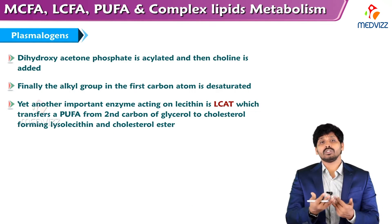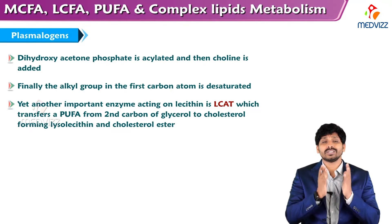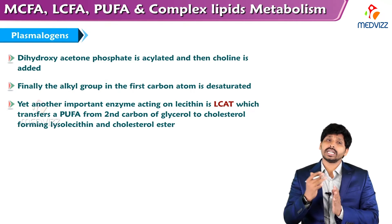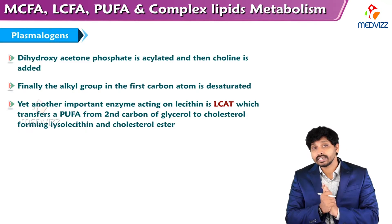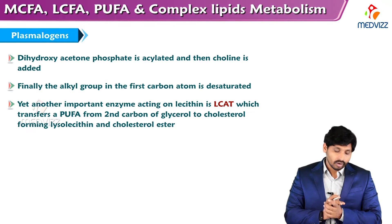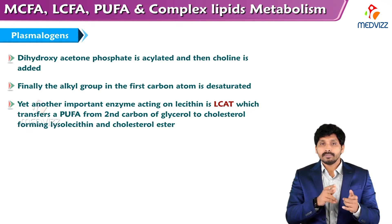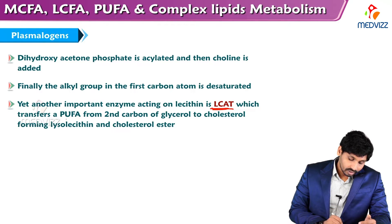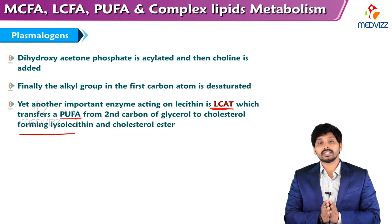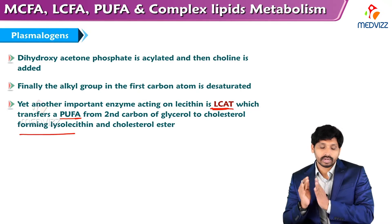Plasmalogens: dihydroxyacetone phosphate, which is an intermediate of glycolysis, can be converted back to glycerophosphate. Dihydroxyacetone phosphate is acylated and then choline is added; finally, the alkyl group at the first carbon is desaturated. Another important enzyme acting on lecithin is LCAT — lecithin-lysolecithin acyltransferase — which transfers PUFA from the second carbon of glycerol to cholesterol, forming lysolecithin and cholesterol ester.